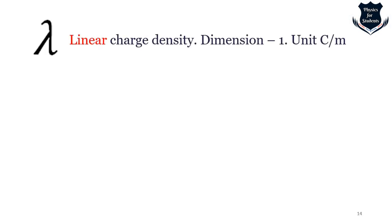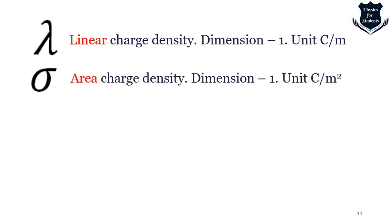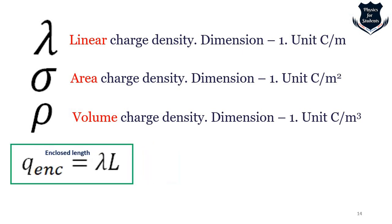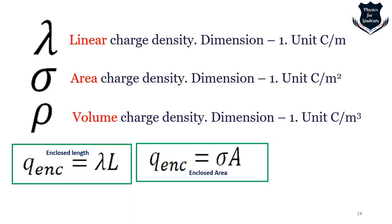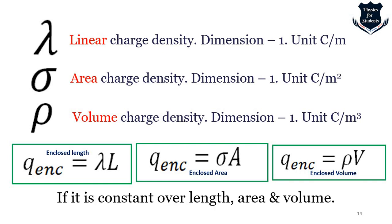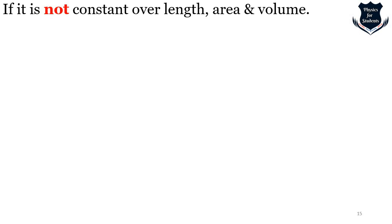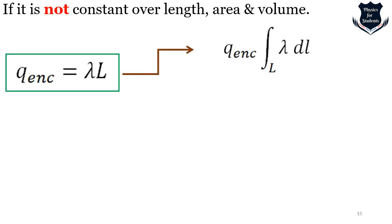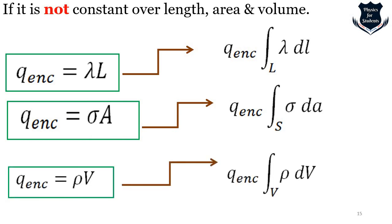In physics, as the model becomes more complex, we use charge density. Lambda is the linear charge density, sigma calculates area charge density, and rho calculates volume charge density. For an enclosed length L, multiply by lambda; for enclosed area, multiply by sigma; for enclosed volume, multiply by rho — provided the density is constant over that length, area, or volume. When it is not constant or involves curvilinear coordinates, we use integration.